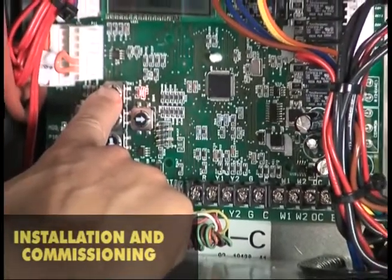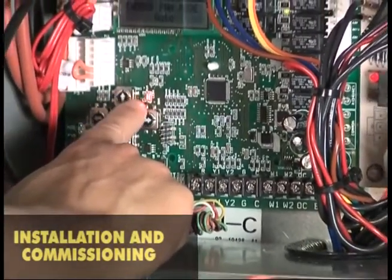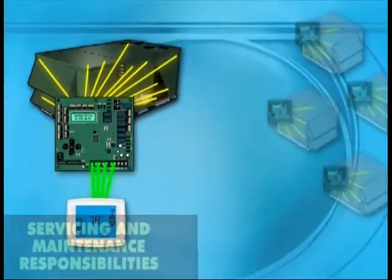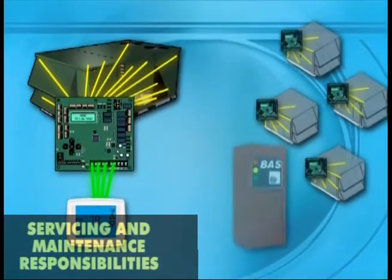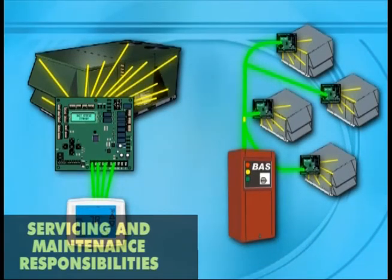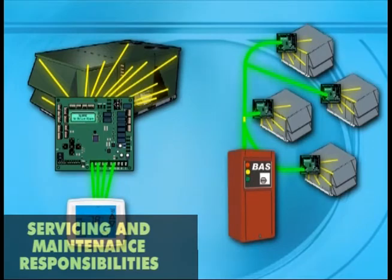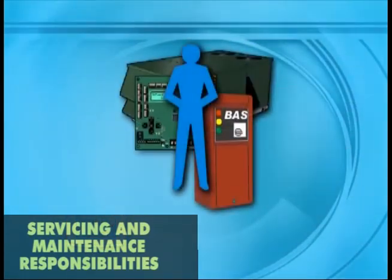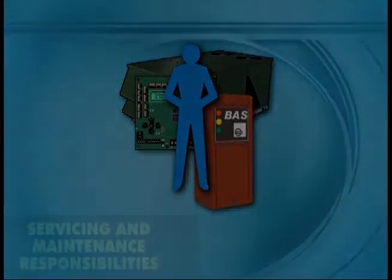A system in another building may be linked to a network that controls more than comfort equipment. This is especially true when connected to a BAS, or Building Automation System. In that case, more than one technician may be responsible for the equipment.